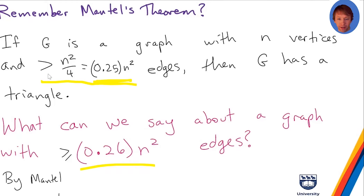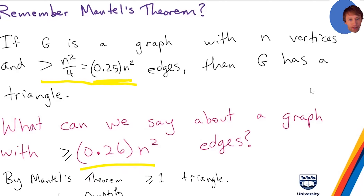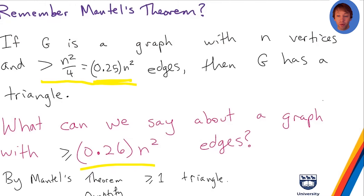But that sounds pretty weak. To just say there's at least one triangle isn't very good. What we want to say is how many triangles must you have — we want to quantify the number of triangles. We're going to show you can get a heck of a lot more. This is called a supersaturation problem in combinatorics.